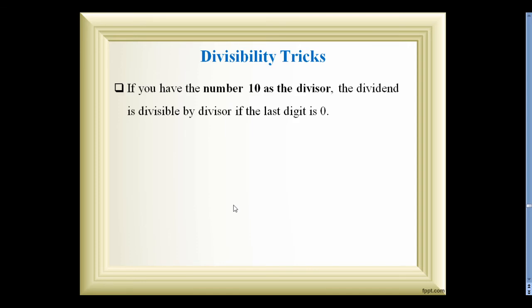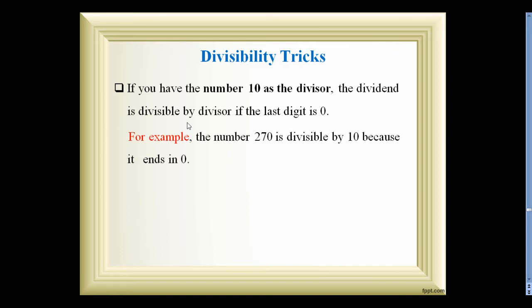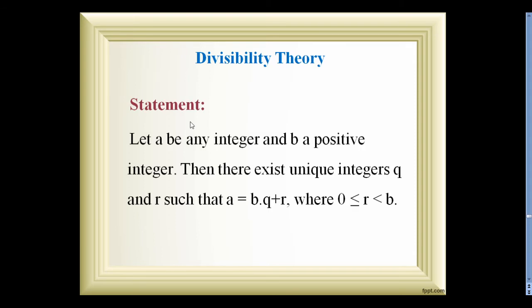If a number has 10 as a divisor, the dividend is divisible by the divisor if the last digit is 0. For example, 270 is divisible by 10 because the last digit is 0. The divisibility theorem states: let a be any integer and b a positive integer; then there exist unique integers q and r such that a = bq + r, where r lies between 0 and b.